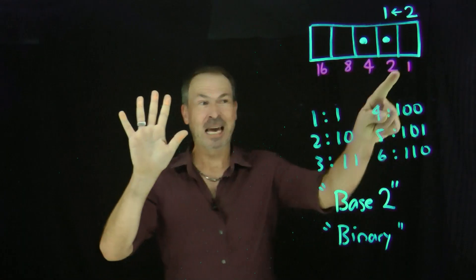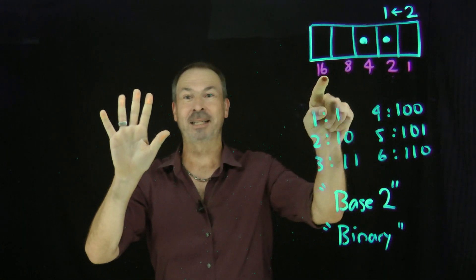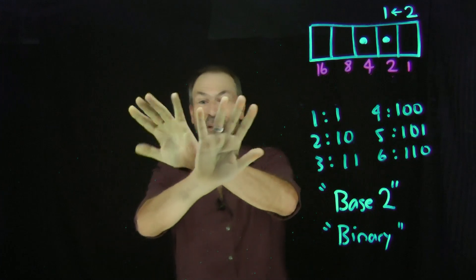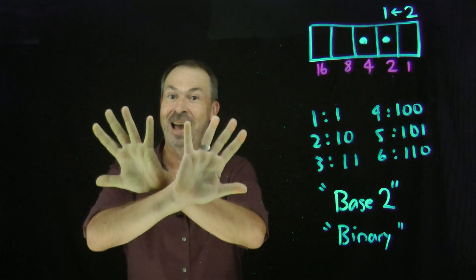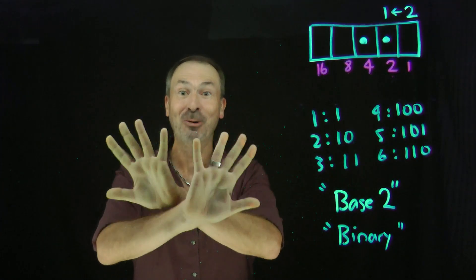Which now makes me think — if I kept going 1, 2, 4, 8, 16, 32, 64, and so on, and used all 10 digits, how high could I count on two hands?